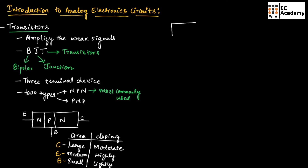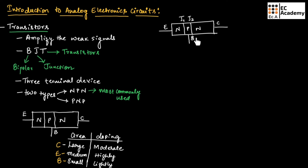In a BJT there are two junctions: Junction J1 between Emitter and Base, known as the Emitter-Base Junction, and Junction J2 between Base and Collector, known as the Collector-Base Junction. We need to apply biasing across J1 and J2 so that the BJT turns on and starts conducting.